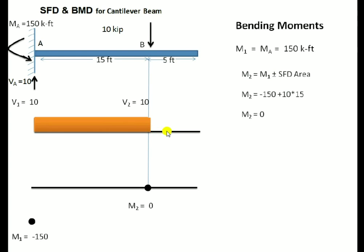We will subtract it if it is below the baseline. Now it is above the baseline, so we will add it. We can find M2 which is equal to 0 at B.